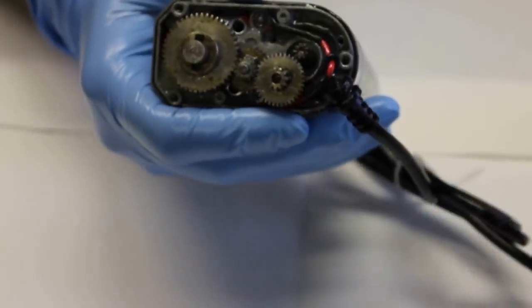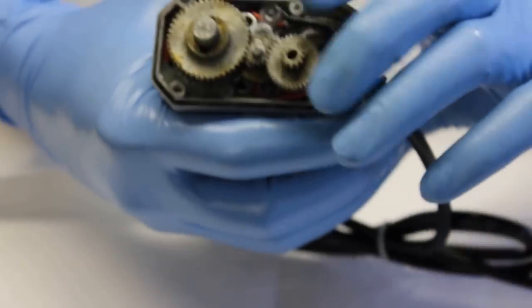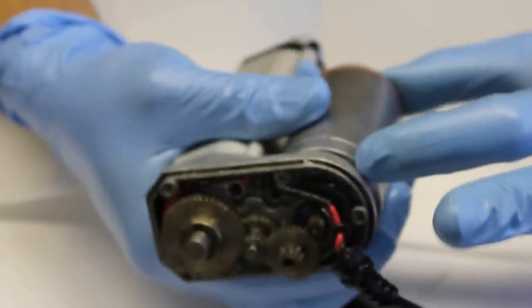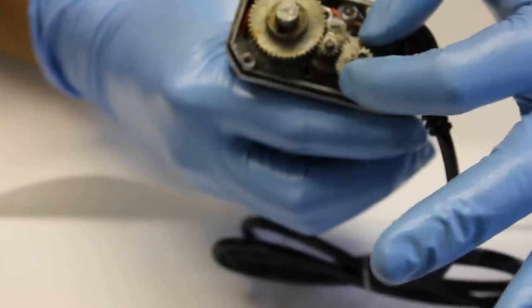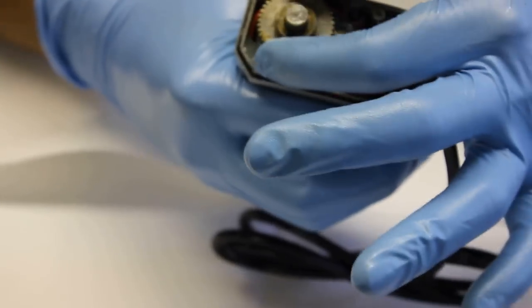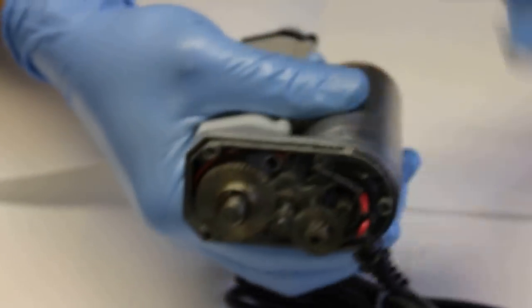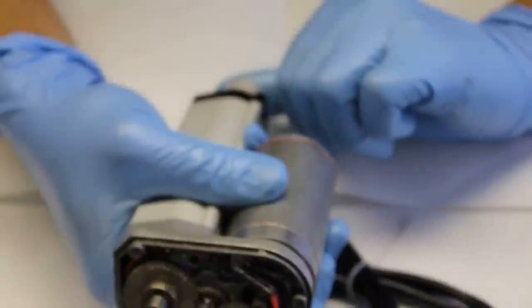When I remove the bottom cap here, you can see this is the motor here. It's connected to a gear which turns two more gears, which finally turns the last gear which extends and retracts the actuator.